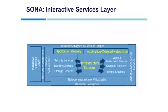The second layer is the Interactive Services Layer. It enables efficiency when it comes to the allocation of resources for applications and business processes delivered through the network infrastructure. Application and business processes include voice and collaboration services, mobility services, security and identity services, storage services, compute services, application networking services, network infrastructure virtualization, services management, and adaptive management services.